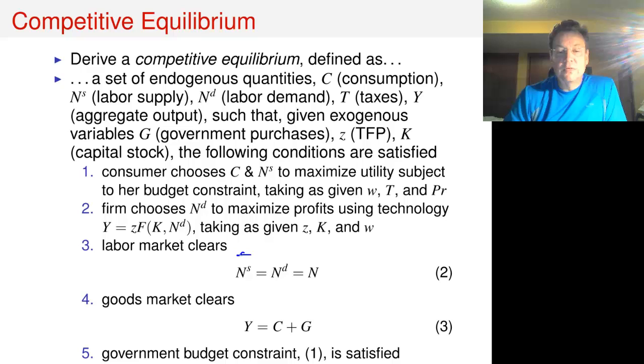Labor market clears, meaning labor supply equals labor demand. We'll call the equilibrium value of labor N. Goods market clears, so Y equals C plus G, and the government budget constraint has to be satisfied.